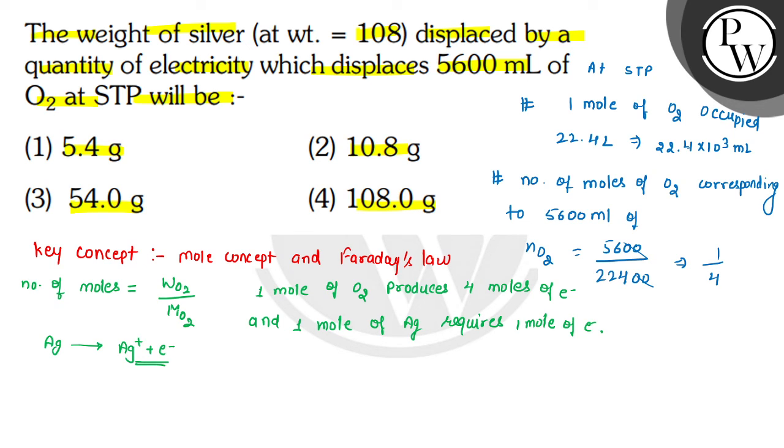Using Faraday's law, we can write this formula: weight of silver divided by molecular mass of silver times 1, because 1 electron is used, equals weight of oxygen divided by molecular mass of oxygen times 4.